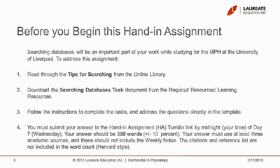You must submit your answer to the hand-in assignment TurnItIn link by midnight, your time, on day 7, which is Wednesday. Week 2 starts on a Thursday and finishes on a Wednesday, so you have to submit it Wednesday night before midnight. Your answer should be around 350 words and must include at least three academic sources. These should not be any of the sources from the weekly notes, nor any sources we cover in this presentation. The citations and reference list are not included in the word count.